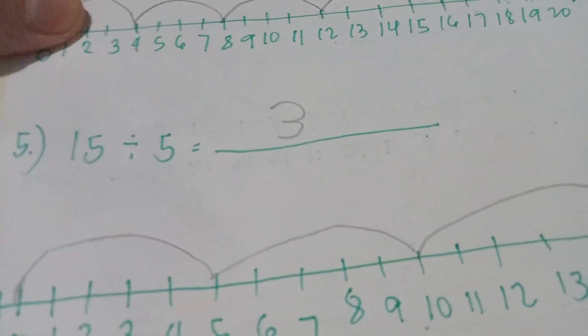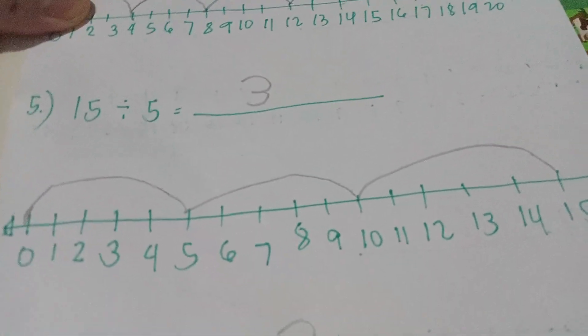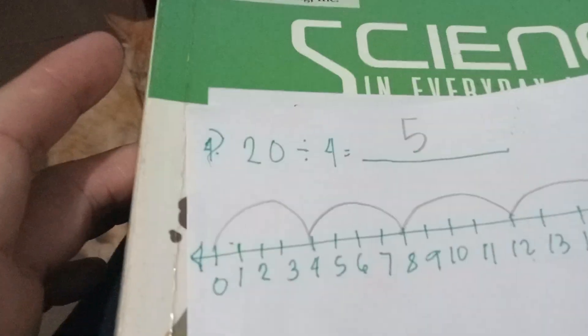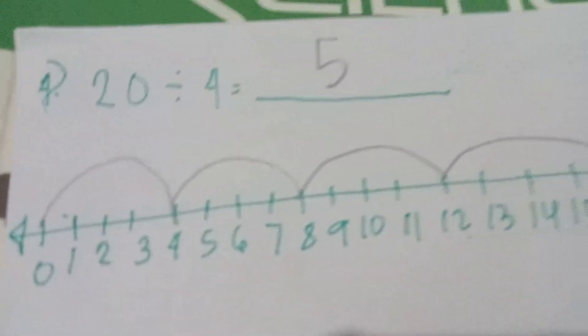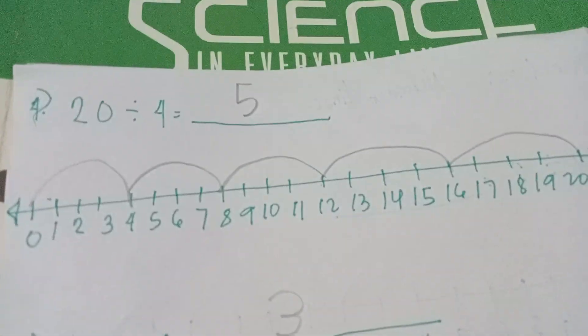Next, he answered 15 divided by 5 equals 3, showing here the curves. Then 20 divided by 4, he answered 5, which is correct my dear viewers, because we have 5 curves now.